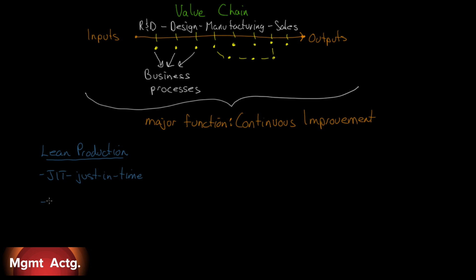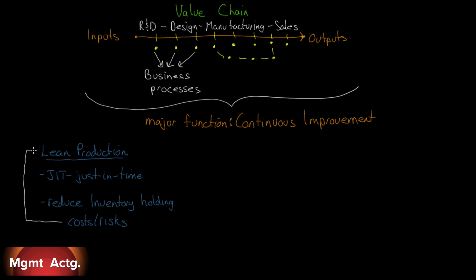Lean production is a big one — what we call just-in-time inventory systems. Most large manufacturing companies are just-in-time. The main emphasis is to reduce inventory holding costs and risks. If you can reduce your inventory costs, you reduce your working capital needs and short-term financing costs. You're saving money all over the place. Hence the term lean production — you don't have bloated inventories.